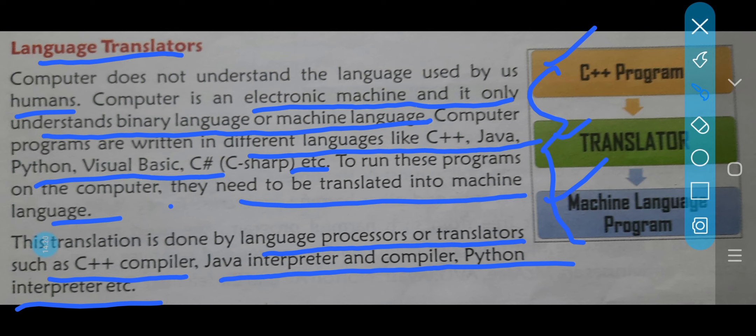Like jaise aap logo ke school mein admission lete ho — at the age of 5 or 6, aap school gaye, admission liye. And uske baad kya aap straight away standard 10 mein class ho jate ho? No, it's not possible — that would be impossible, it's a funny joke. Because there is a rule — ki pahale aapko LKG, then UKG, uske baad standard 1, 2, 3, 4, 5, 6, 7, 8, 9, and after that 10th standard comes. Aap soch lijiye ki aapko total 11 years lagte hain standard 10 mein aane mein.